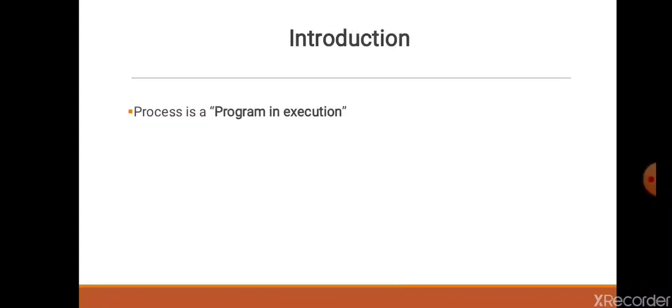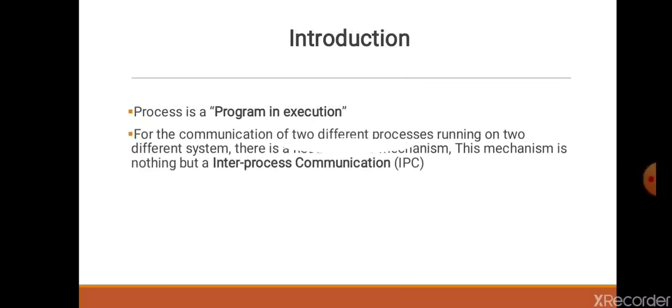We know that a program in execution is nothing but a process. When two computers of a distributed operating system are communicating, it means two processes, one on each computer, are communicating with each other. In distributed operating systems, executing processes on different computers often need to communicate with each other to achieve some goal. For the communication of two different processes running on different systems, there is a need of some mechanism.